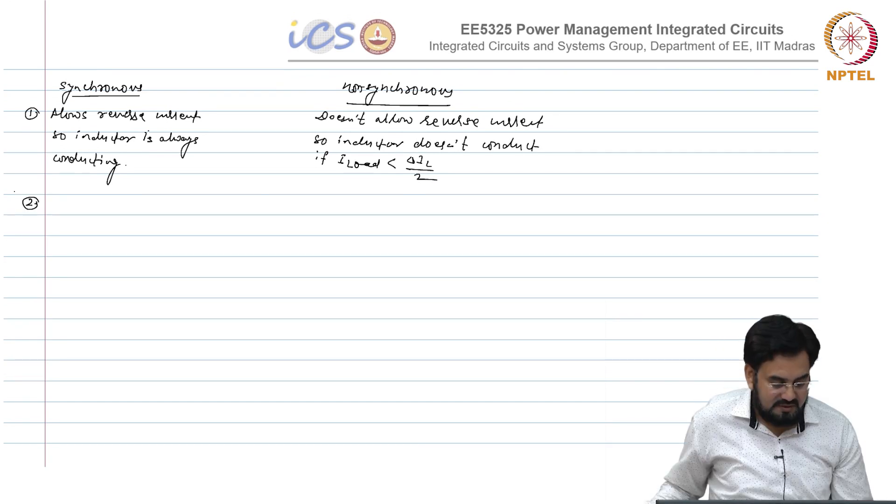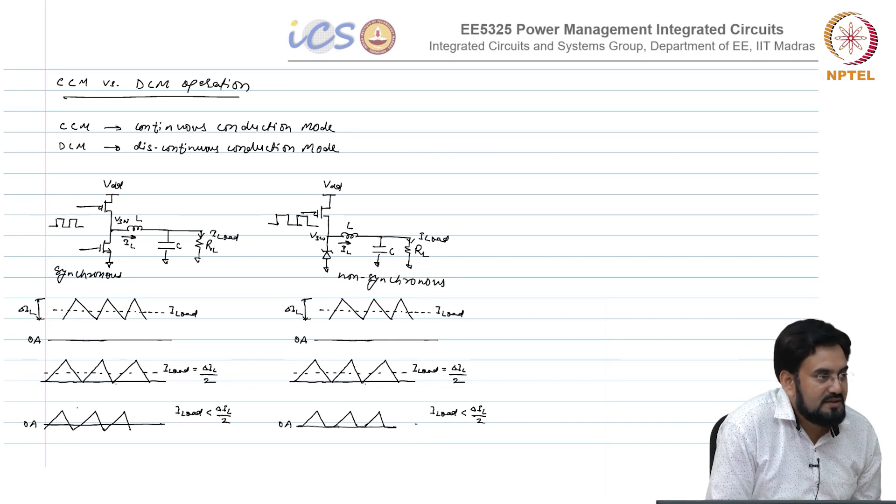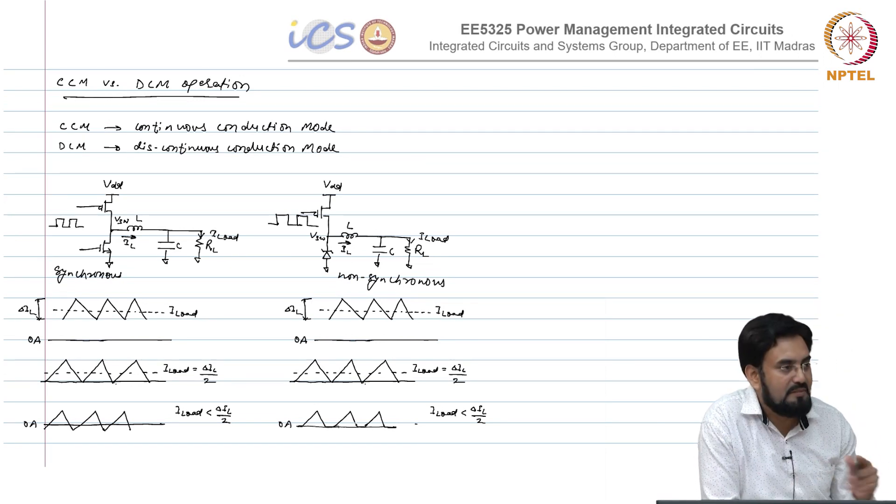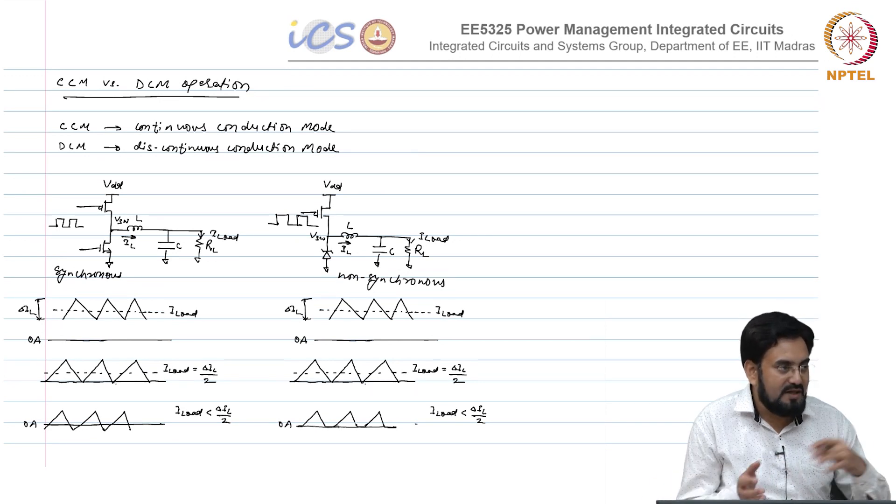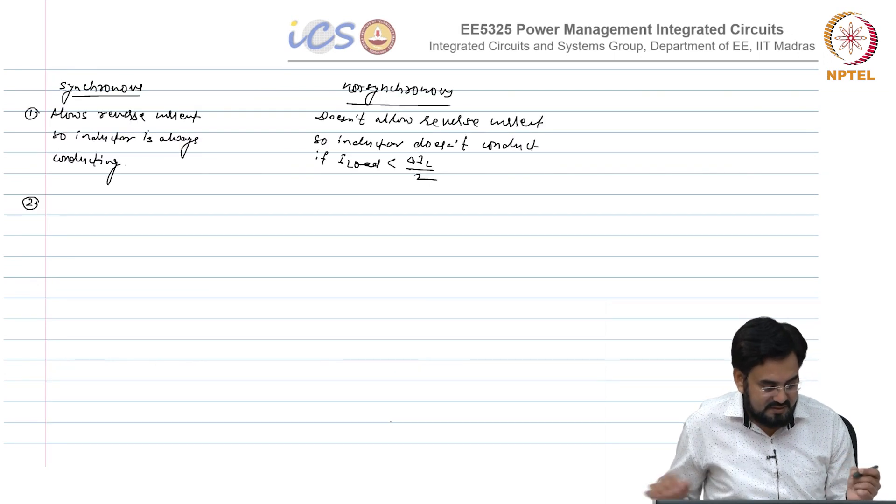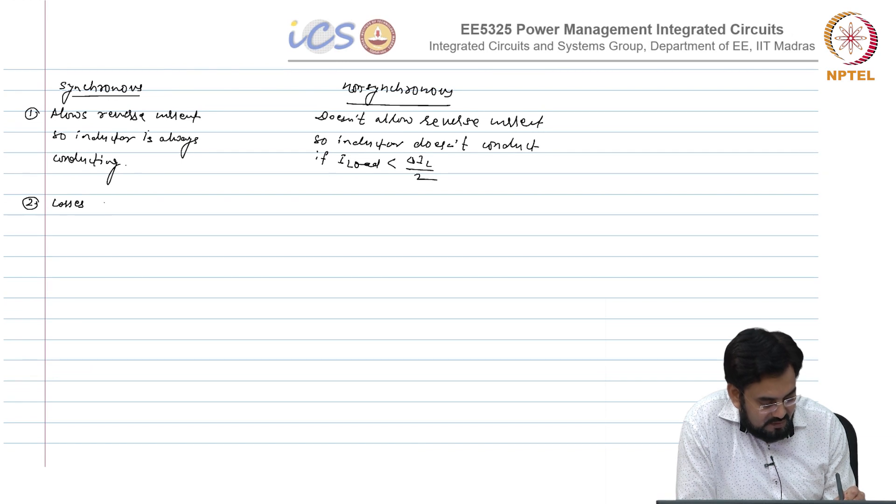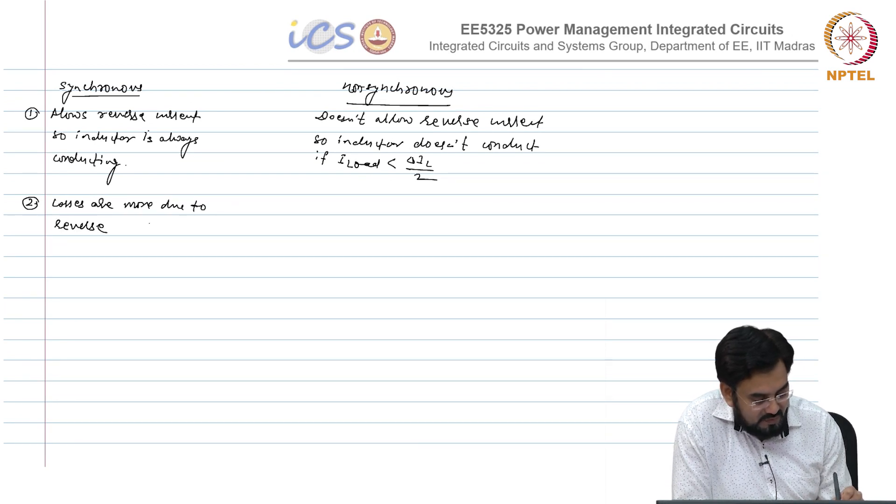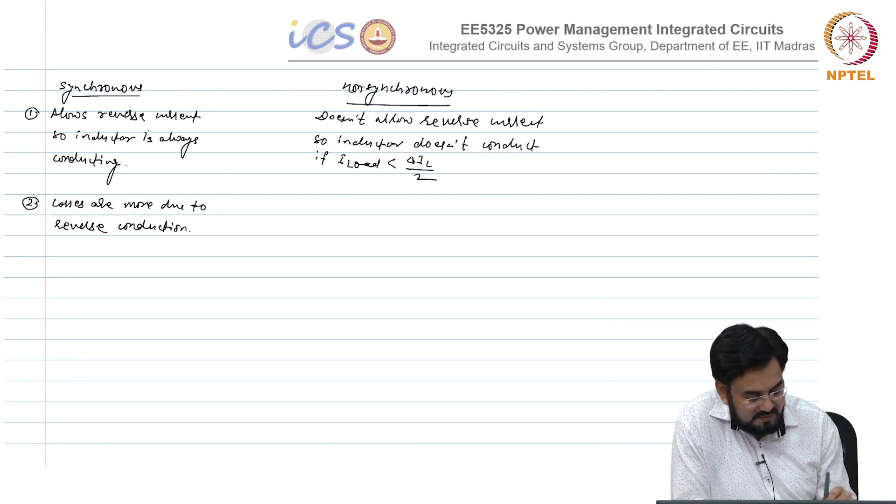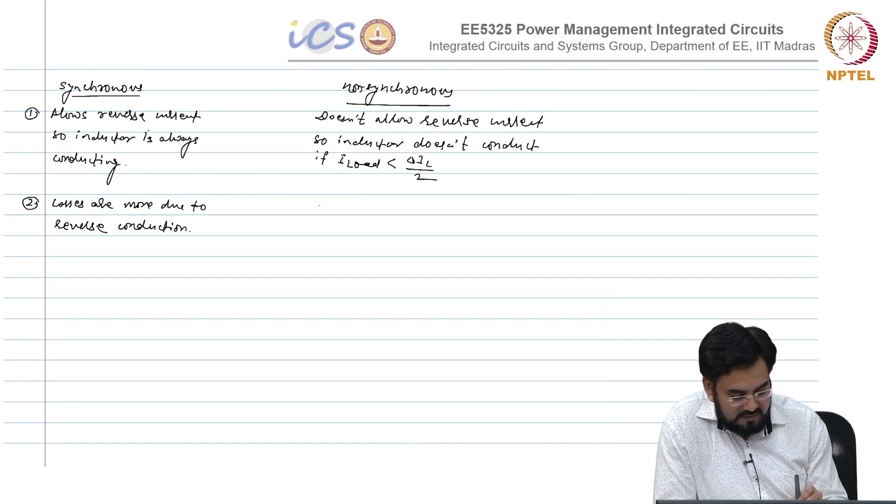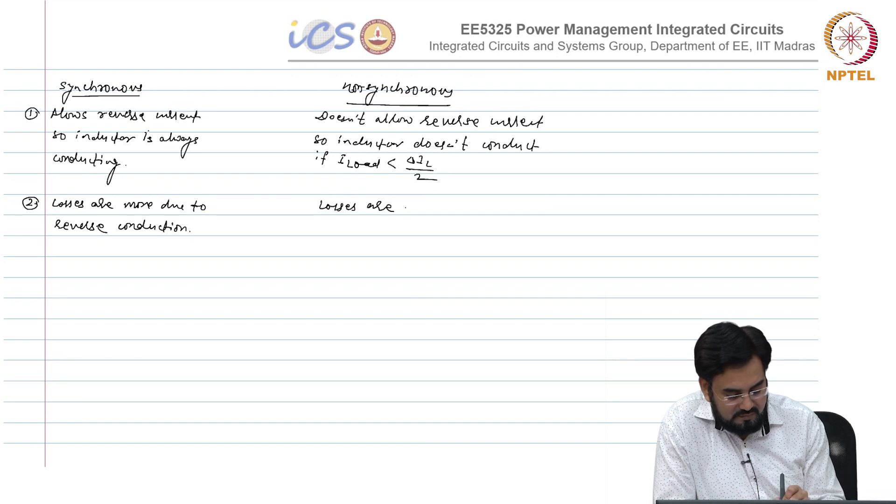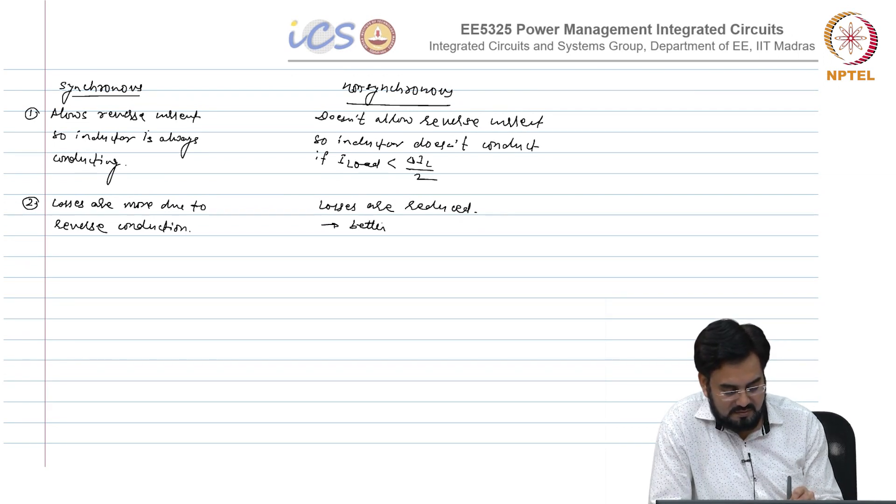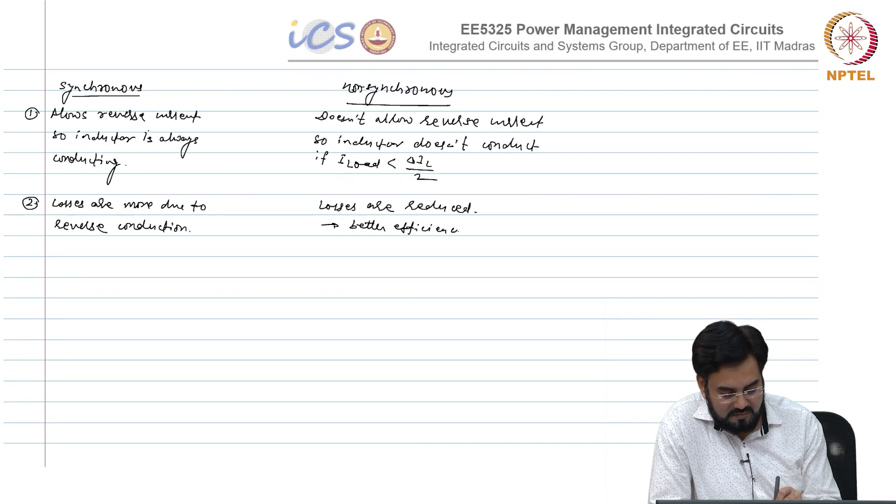Which one will have a better efficiency? If you look at here, you are dumping in the ground the current, that is lost. In order to fill up that, that means you have to draw more charge from supply. Here you are not dumping any current, everything is supplied to the load. So you do not need to cancel the losses. That will have better efficiency. Losses are more due to reverse conduction. This is better efficiency, which means better efficiency.